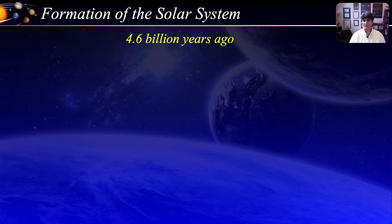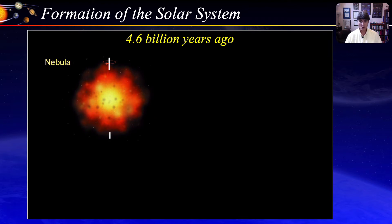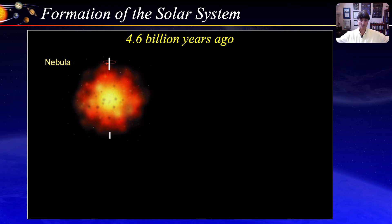We start our journey about 4.6 billion years ago. Our solar system formed from an initially slowly rotating interstellar cloud of gas and dust. This cloud is called a nebula, from the Latin word for cloud. As the cloud gravitationally collapses under the effect of its own gravity, it spins faster and faster. In physics terms, this is called the law of conservation of angular momentum. The best way to understand this is the example of an ice skater — starting a spin slowly with arms stretched out, and as the arms are brought in closer to the body, the spin gets faster and faster.